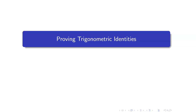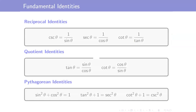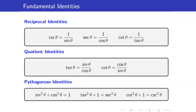In this lesson, we are going to prove trigonometric identities. Let us first recall the following fundamental identities. It is very important that you memorize these identities by heart. We have the reciprocal identities, the quotient identities, and Pythagorean identities.